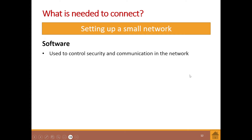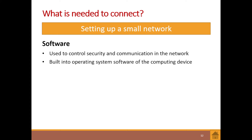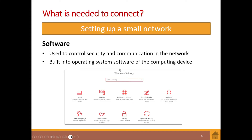On the software side, software is used to control security and communication within the network. Most of this is built into the operating system of the particular computing device. In Windows settings, you'll find a network and internet setting there as well.